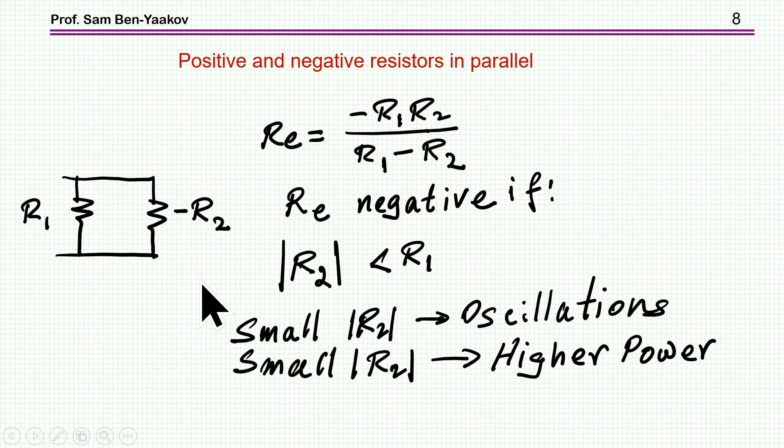Next thing I'm going to discuss, which is very simple, is what happens if you have a positive resistance and a negative resistance. Well, you take the parallel combination of these, you get this expression, and it is clear now that for this to be negative, then the absolute value of R2 has to be smaller than R1. Because if the absolute value of R2 is larger than R1, then we have a negative denominator, and therefore this is positive. So again, for this combination to be negative resistance, we have to have this absolute value of R2 to be smaller than R1.